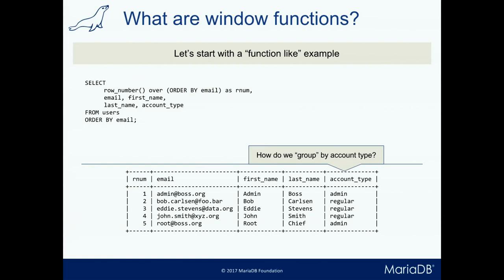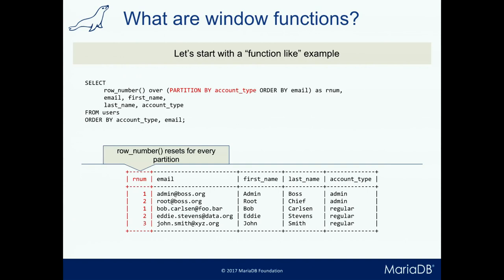What if we want two separate sequences of numbers — one for admins and one for regular users? We can split this up with another syntax: PARTITION BY. It's very similar to GROUP BY — all rows are split up by account type, so you can look at it as if these were separate tables. We're computing row number across admins and regular users separately. I have another example that will clear up how PARTITION BY and ORDER BY work.